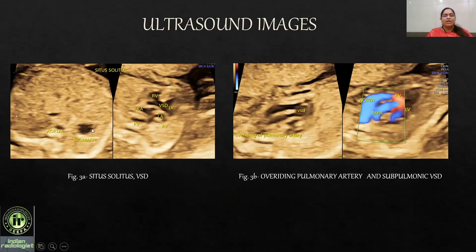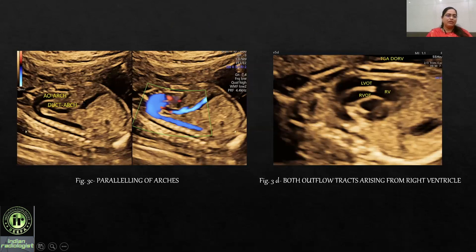On imaging, the fetus was in breech presentation with situs solitus confirmed. The right atrium was draining into the right ventricle and the left atrium into the left ventricle, with an inlet VSD visible. In the outflow tract, a VSD was seen just beneath the pulmonary artery — a sub-pulmonic VSD. The right ventricle was giving rise to both the aorta and the main pulmonary artery. Paralleling of the aortic and ductal arches was seen, with the aortic arch arising from the anterior right ventricle. Both outflow tracts arose from the right ventricle, concluding the diagnosis of Taussig-Bing type of double outlet right ventricle.